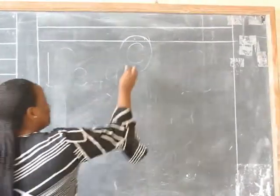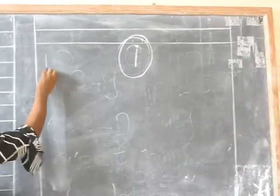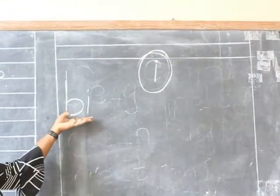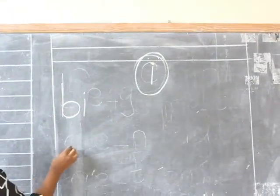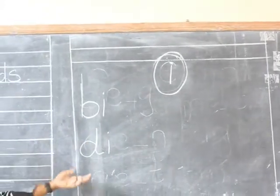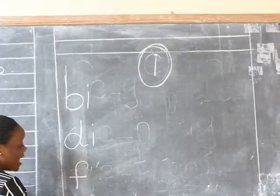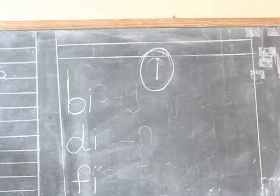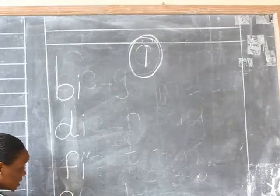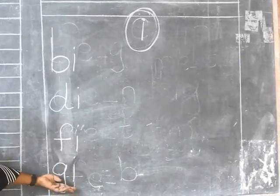Let me write bubble e here. When I have bu and e, I'll get syllable bi. When I have du and e, I'm going to get syllable di. When I have f and e, I'm going to get syllable fi. When I have sound gu with bubble e, I'm going to get syllable gi.